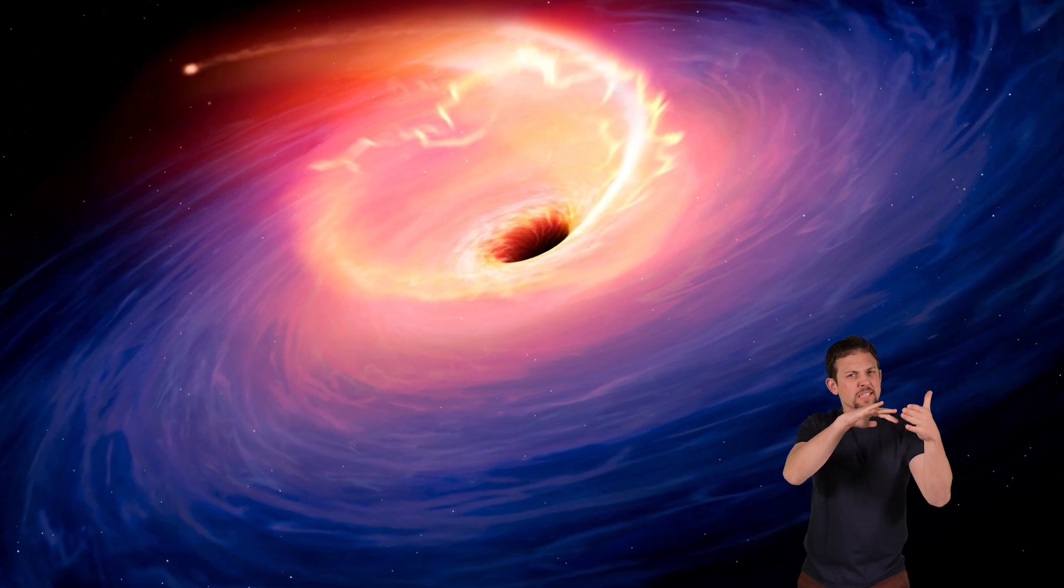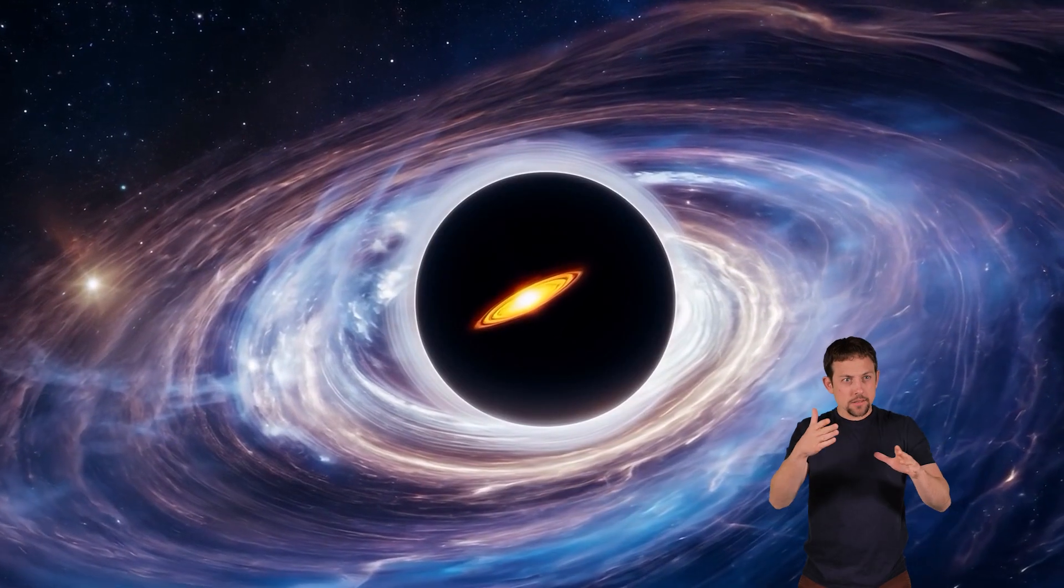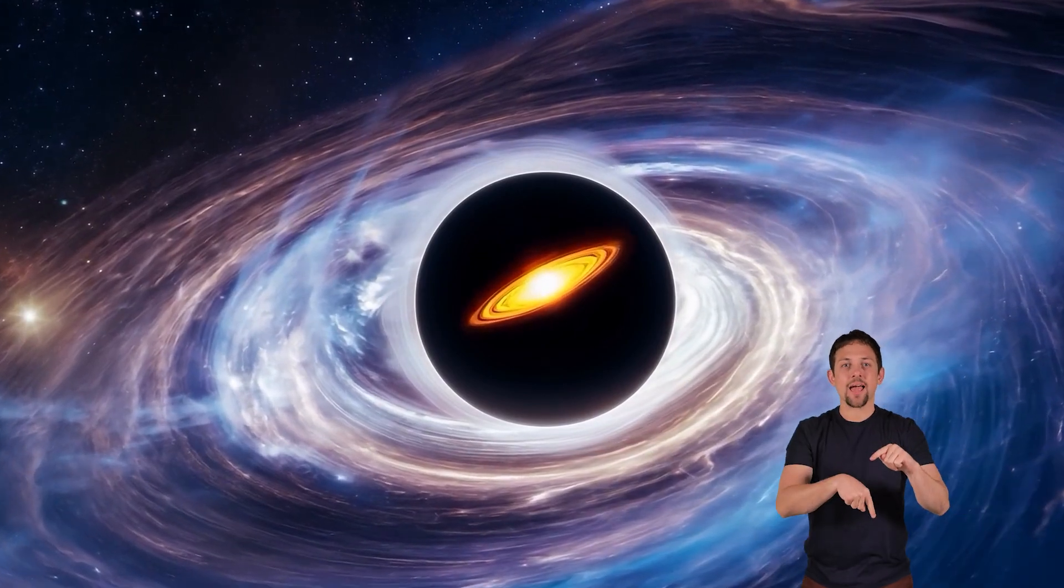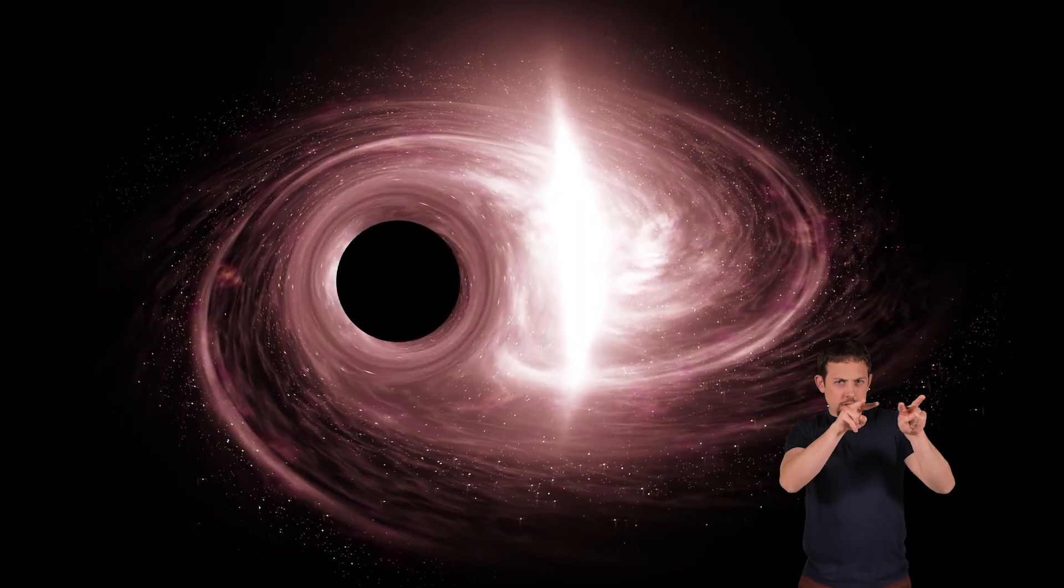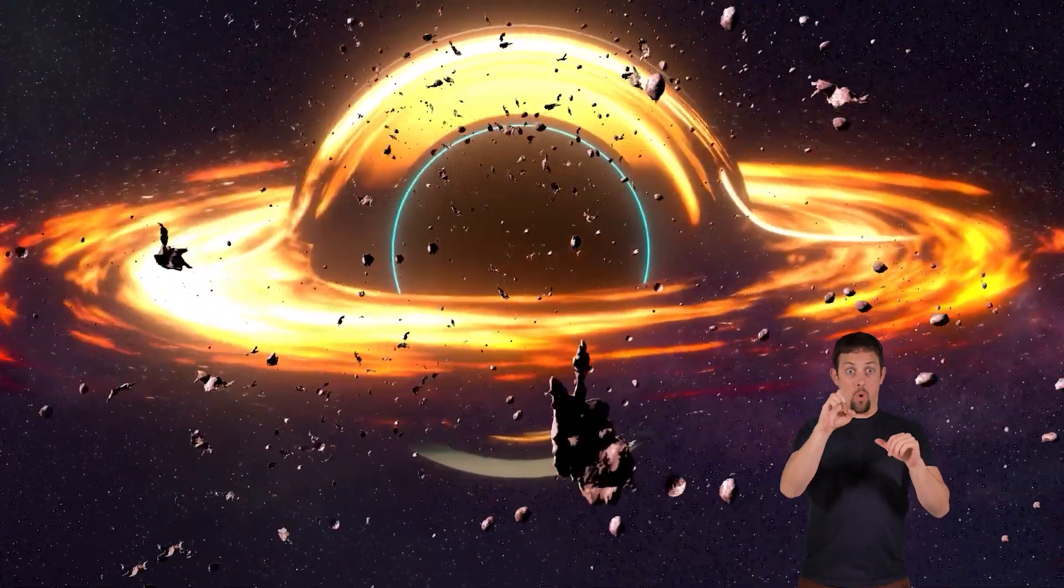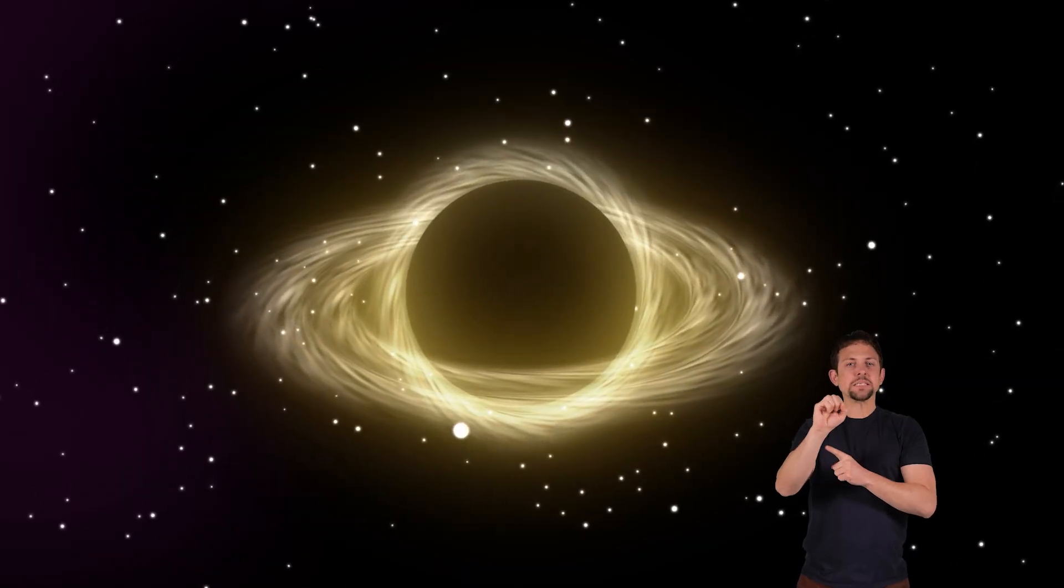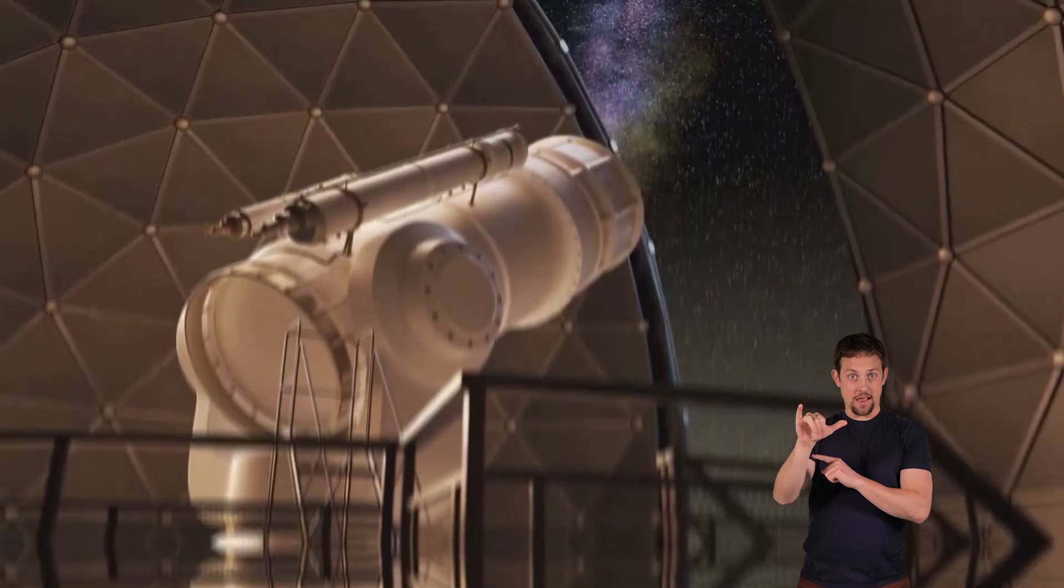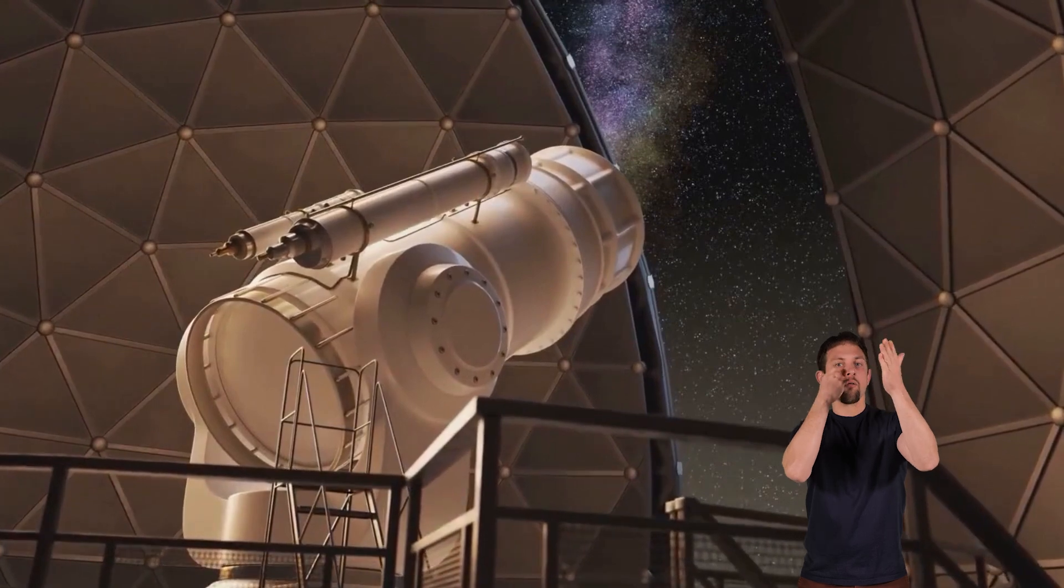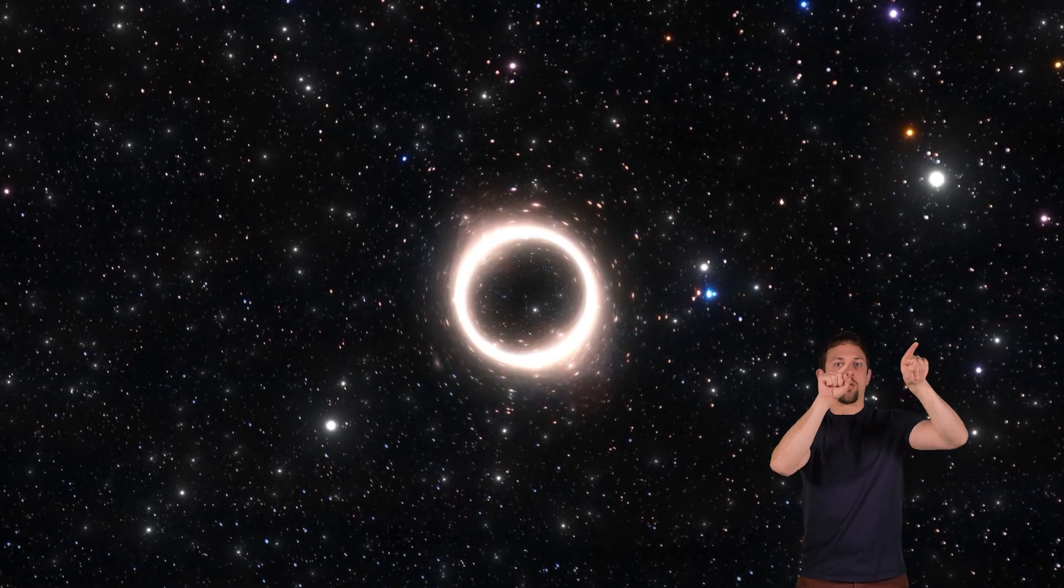Black holes are difficult to study because they do not emit light, so scientists cannot see them directly. Instead, they look for the effects that black holes have on nearby objects. For example, when a black hole pulls in material from another star, it creates a disk of gas and dust that heats up and emits x-rays. Scientists then use telescopes to detect the x-rays to identify the presence of a black hole.